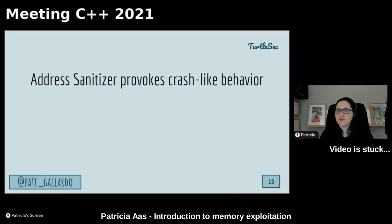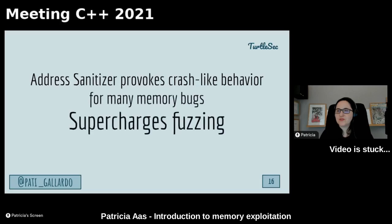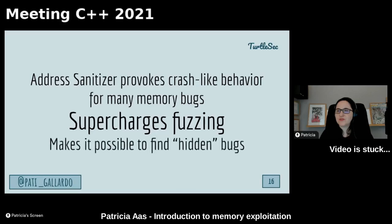AddressSanitizer gives us crash-like behavior at the moment of a memory error. If we combine this with fuzzing, we get a supercharged fuzzer. If we can trigger any type of memory error, the fuzzer will record it as a crash and we can look at the input and see if we can exploit it. This combination of coverage-guided fuzzing with AddressSanitizer makes it really easy to find memory errors in C++ and C applications. That, in my opinion, is the reason for the massive surge in memory-related bugs we've seen in the past few years — because they are super easy to find.